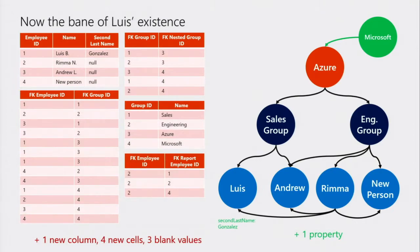One last example: if you have a Hispanic last name, you've probably heard we have two last names. Everywhere I go by Mr. Gonzalez, which is my second last name, and that's not me. The way I solved it in the relational space, I added an additional column — but in the graph, I just added an additional property. I don't have to change the rest of the entries in the employees table to have a null second last name just because I needed one.